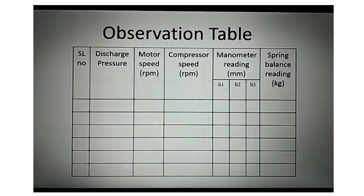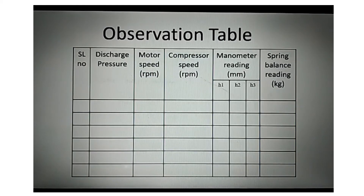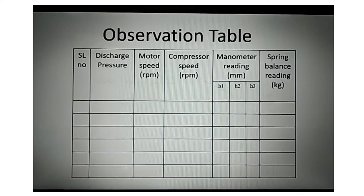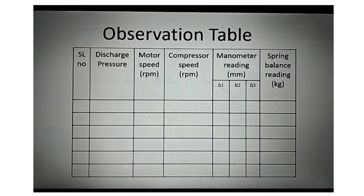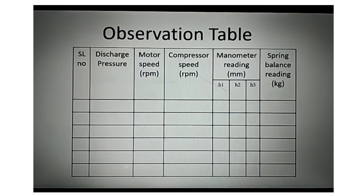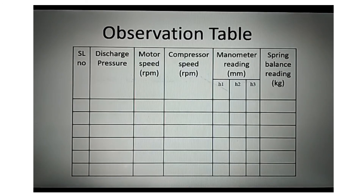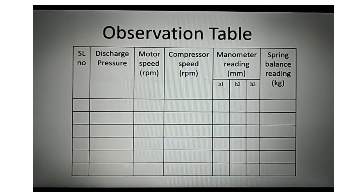Here we can see the observation table. We have to control the delivery valve for getting the observations. You have to note the discharge pressure, and then correspondingly you will get the motor speed, compressor speed, manometer head reading, and also the spring balance reading. The manometer reading is used to find out how much volume of air is compressed in the compressor — you get it in terms of water and have to convert that into air.